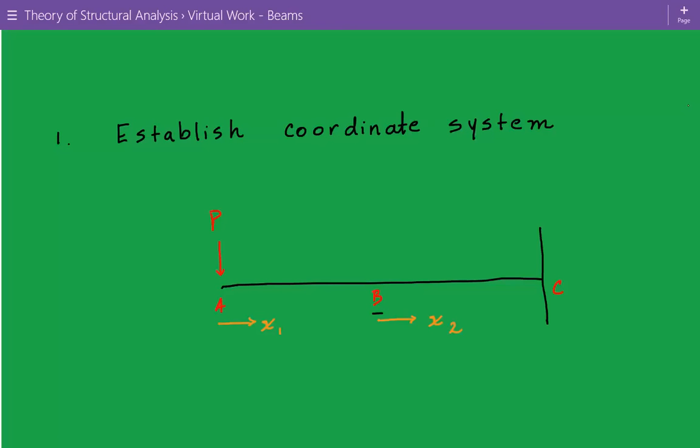So here is the coordinate system that we've chosen, one going from the free end A going to the right, X1, and one going from location B going to the right, X2.